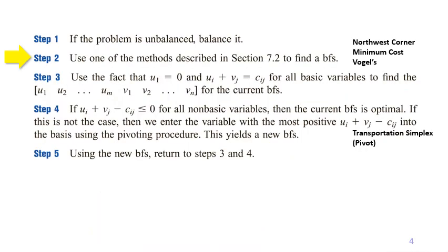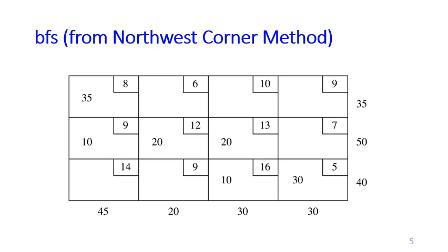In the second step, find a BFS using one of these three methods. Suppose we are using the northwest corner method, and this is the BFS that we've got.